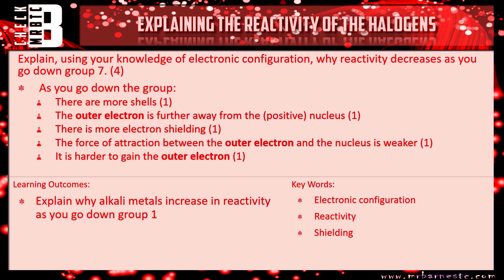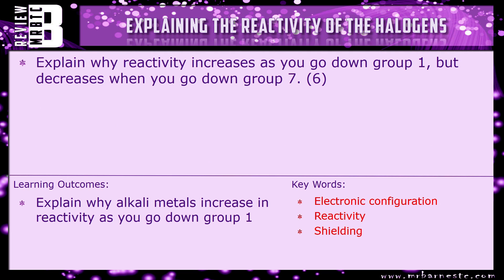I've got a quick review question for you: explain why reactivity increases as you go down group one, but decreases when you go down group seven. Your explanation for both is going to be pretty much identical, and then it's just that final little bit about gaining or losing electrons. I will put a link up in the top right-hand corner about the alkali metals if you can't remember, but it should be fairly straightforward for you now.